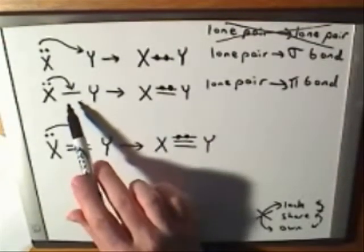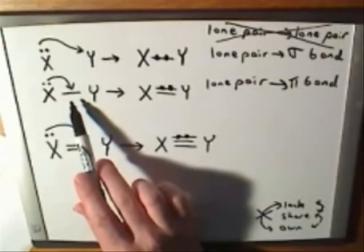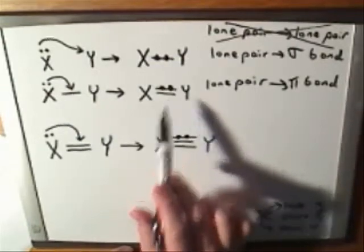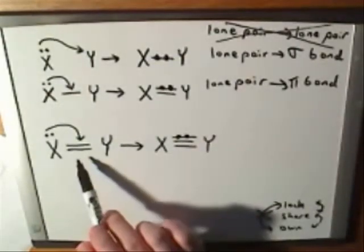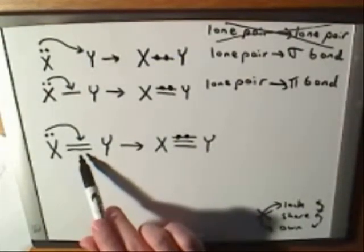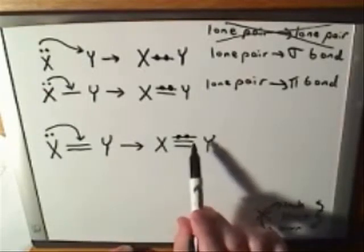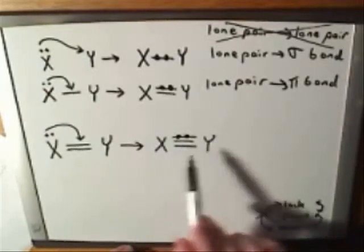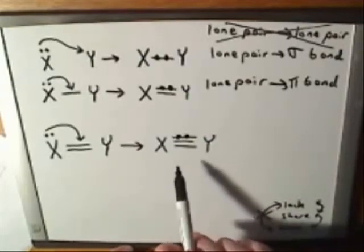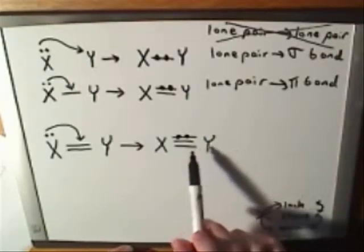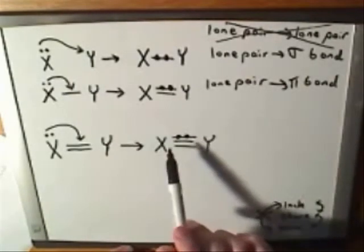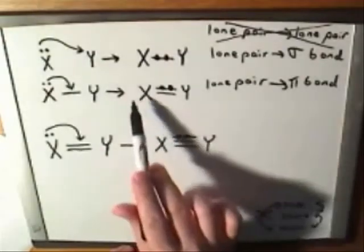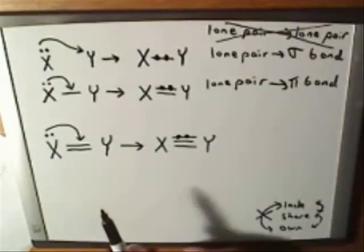Up here there was only a single bond so far, so when we made the pi bond we ended up with a double bond. Down here, the starting material already had a double bond, so when we created the pi bond we were up to three bonds — a triple bond. But I don't think there's any substantial difference between these two examples. If you can handle one, you can probably handle the other as well.